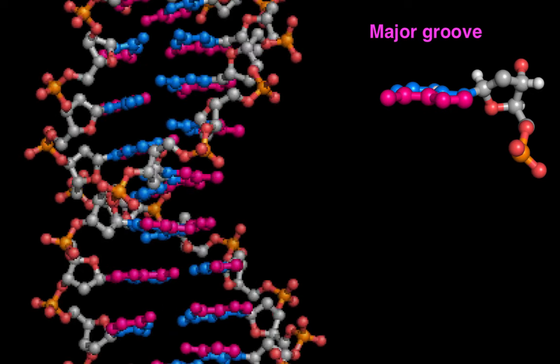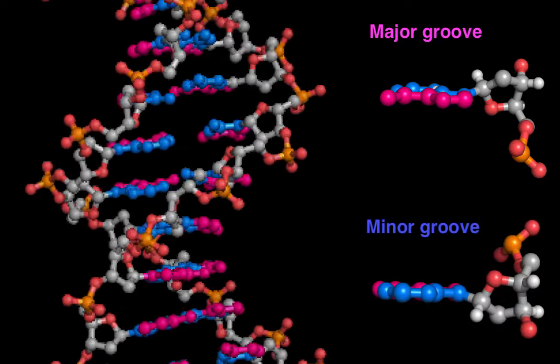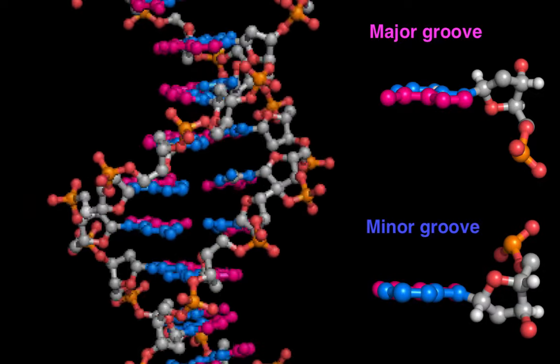And looking again at the right backbone, we can now see that in the minor groove, the deoxyribose always points its ring oxygen up.